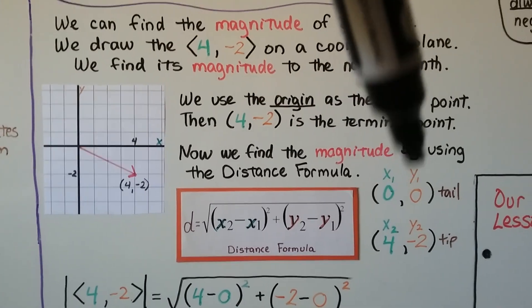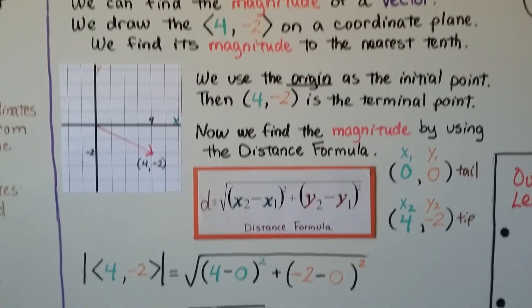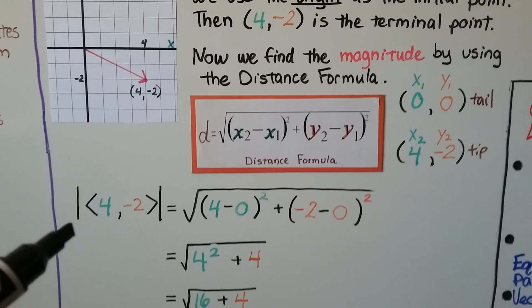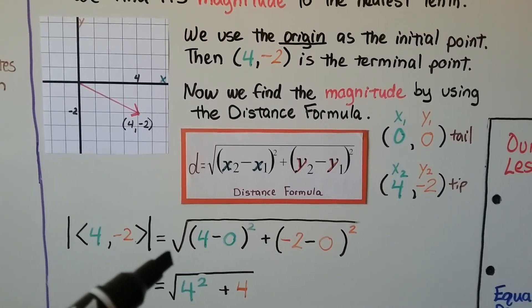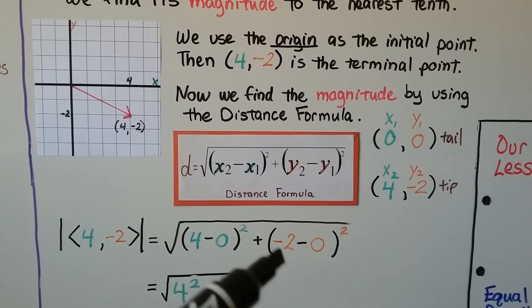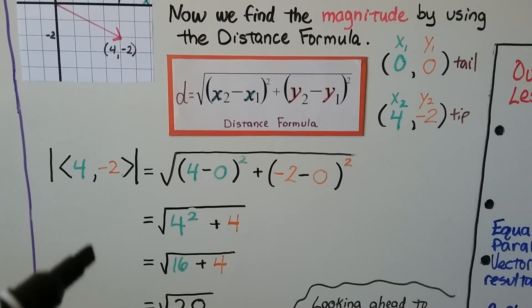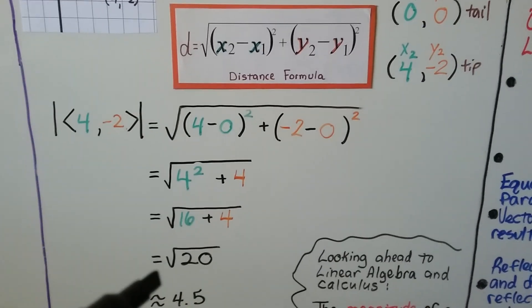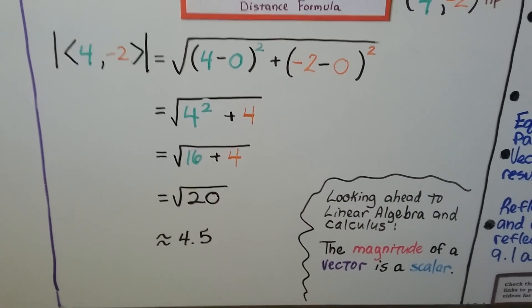And for our tip, our terminal, we've got x sub 2, y sub 2 as a 4 negative 2. So the magnitude of vector 4 negative 2 would be the square root of 4 minus 0 squared plus negative 2 minus 0 squared. That would give us the square root of 4 squared plus 4 or 16 plus 4, which is the square root of 20, which is approximately 4.5.